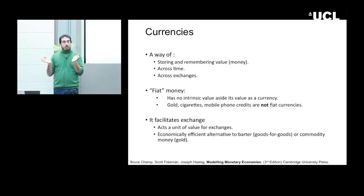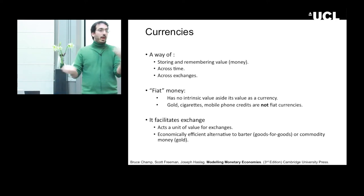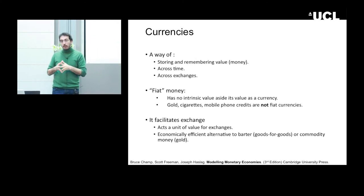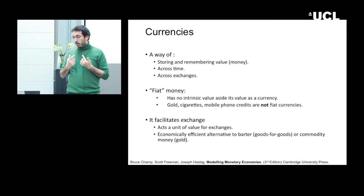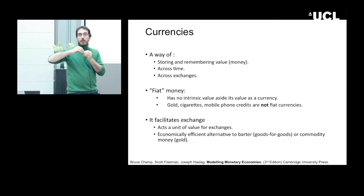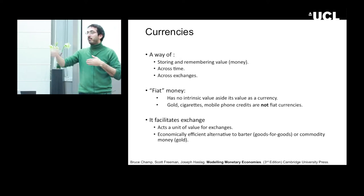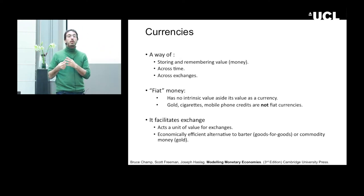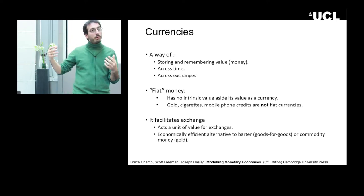So what is a currency? A currency is a way of storing and remembering value across time. You can perform some job today, get some value, and not have to spend it immediately — you can save and buy bread tomorrow, or work during your lifetime and spend when you are retired. Secondly, it's a way of storing value across transactions. If I want bread and I have fish, and you have fish and want bread, we can just trade.